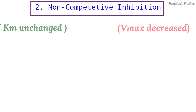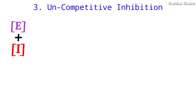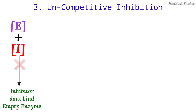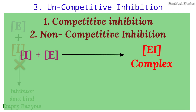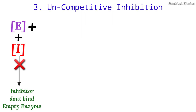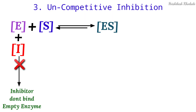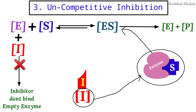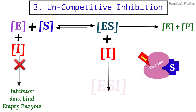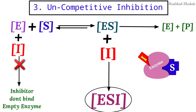Now the last type of reversible inhibition: uncompetitive inhibition. In competitive and non-competitive inhibition, inhibitors can interact with the free enzyme. In uncompetitive inhibition, the inhibitor only attacks the enzyme-substrate complex — there is no interaction between the inhibitor and the free enzyme. This results in the formation of an enzyme-substrate-inhibitor ternary complex.